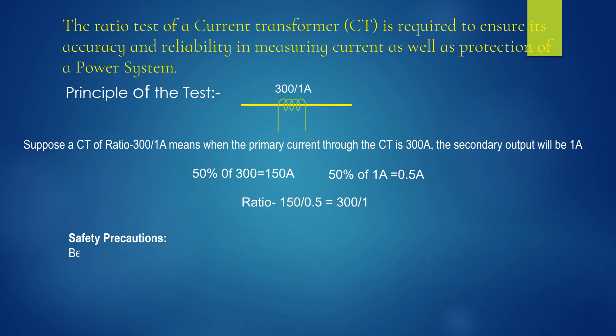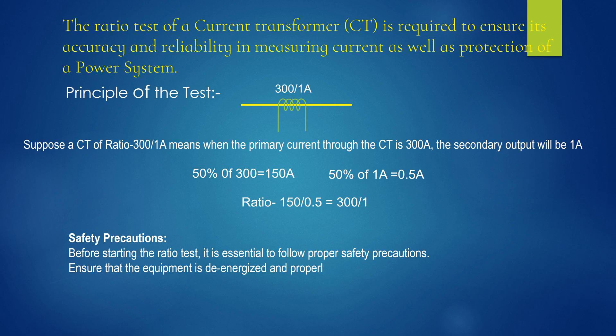Safety precautions. Before starting the ratio test, it is essential to follow proper safety precautions. Ensure that the equipment is de-energized and properly isolated. Use appropriate personal protective equipment PPE and follow safety procedures to prevent accidents.